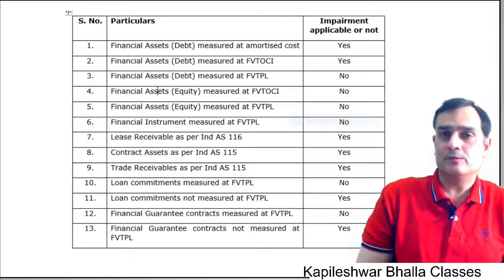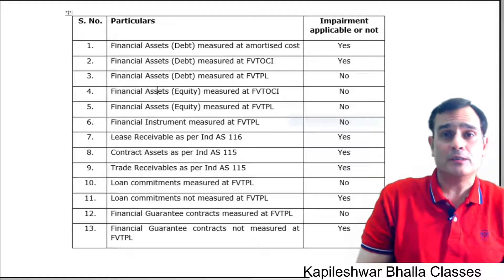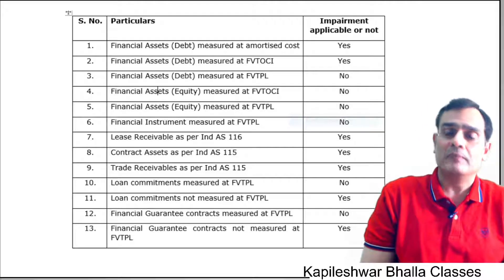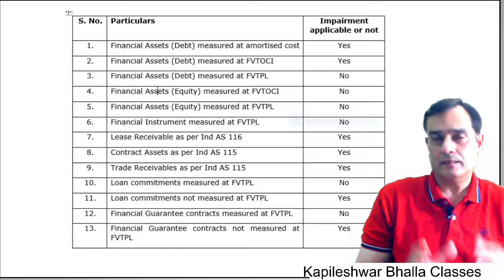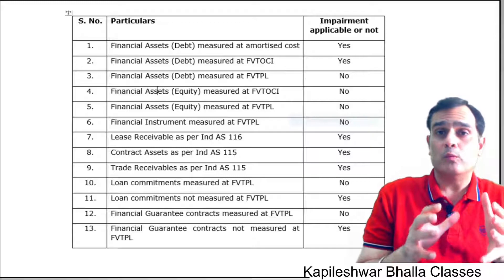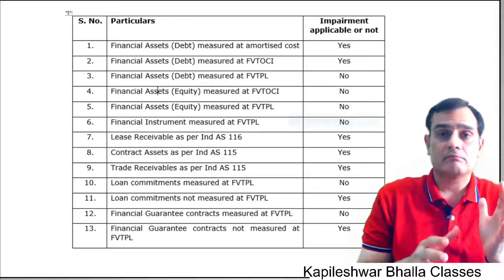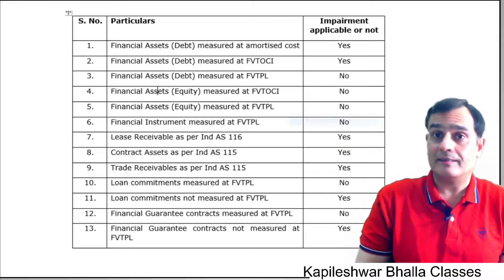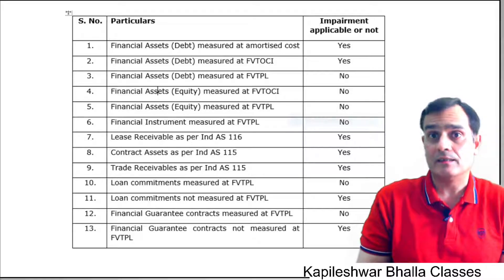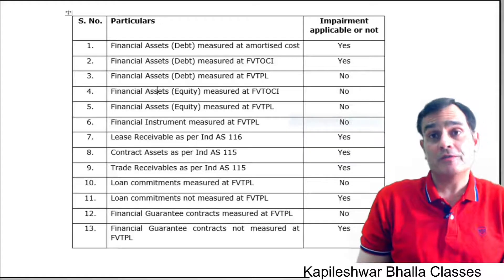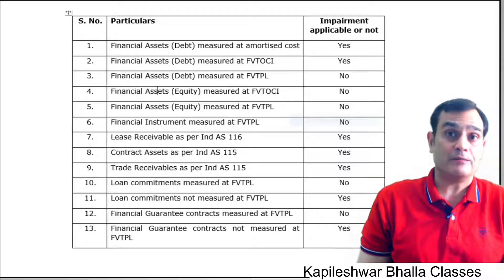In examinations, you would generally see questions coming from the first six categories mainly, though questions on other categories are also possible. The concept is simple: if measured at AC, apply ECL. OCI depends — equity no, debt yes — and the logic is recycling versus no-recycling. If measured at FVTPL, the answer is no, because fair value changes are in any case being taken to P&L.